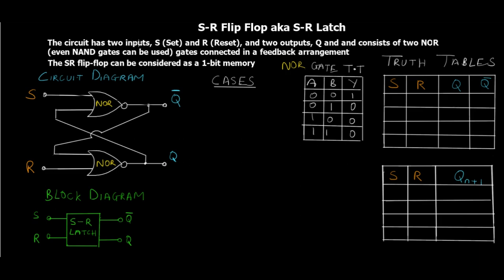Let's start off with a little bit of theory. The SR flip-flop has two inputs — S which stands for Set, and R which stands for Reset — and two outputs: Q and Q-bar. It consists of two NOR gates, though NAND gates can also be used. The gates are connected in a feedback arrangement, which is the crux of sequential circuits: the output is fed back as input, which is why it's termed a sequential circuit.